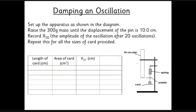This is the first experiment we did for this. You get a spring, put a mass on the bottom - a fixed mass - and then you put a card on. The crucial bit here is this card. What we did was to change the area of that card. You lift it up by a fixed amount, 10 centimeters every time, then you let it go and you count 20 oscillations.